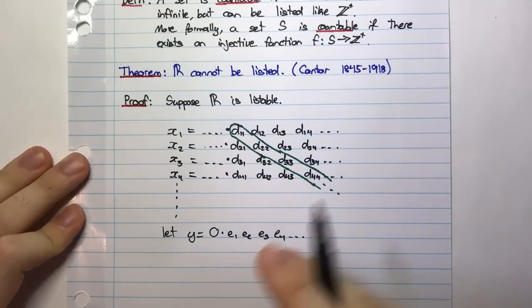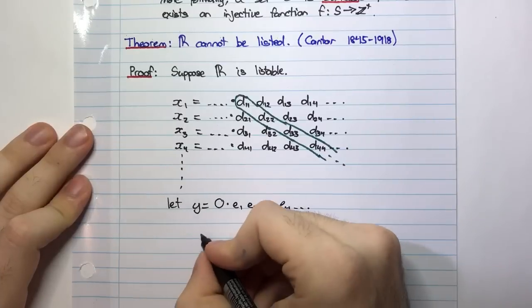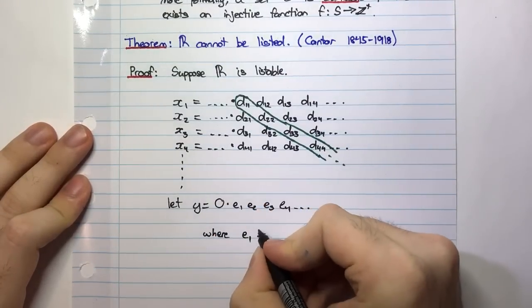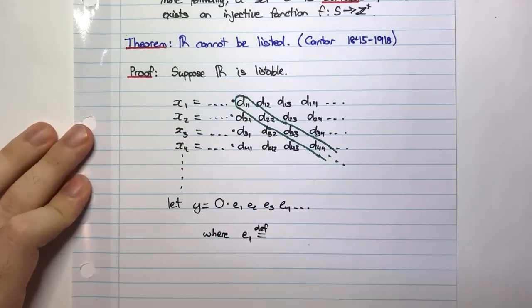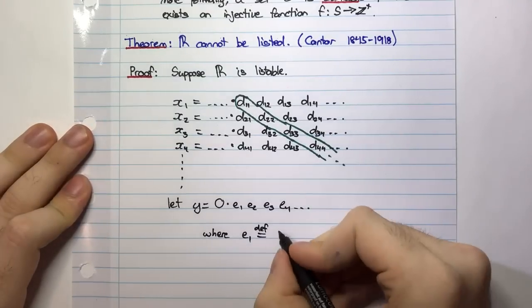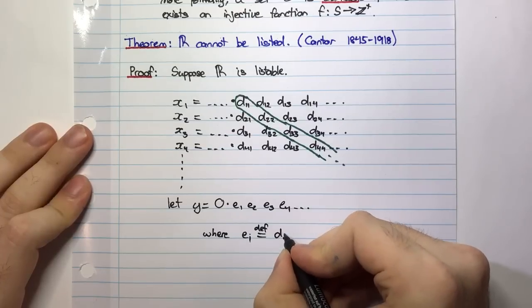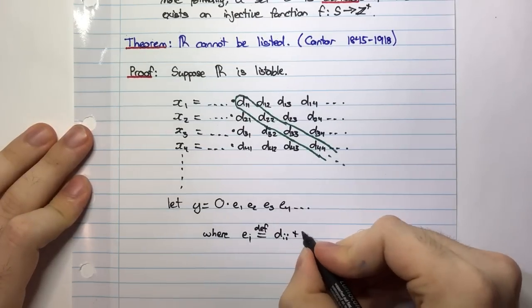And how am I defining these E1s? Well, E1 is specifically defined as, is by definition, is defined as EI is defined as DII plus two.